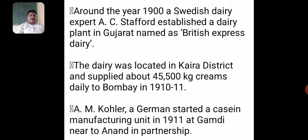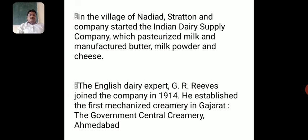A German named A.M. Kohler started a casein manufacturing unit in 1911 at Gamri, near Anand in Gujarat. In the village of Nadiad, Strafford and Company started the Indian Dairy Supply Company, which pasteurized milk and manufactured butter, milk powder, and cheese. The English dairy expert G.R. Ravish joined the company in 1914 and established the first mechanized creamery — the Government Central Creamery — in Ahmedabad.